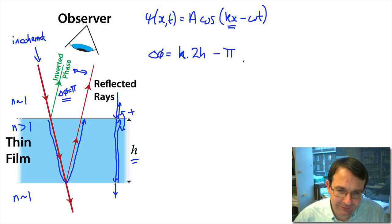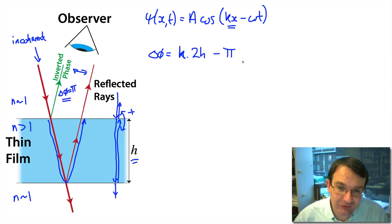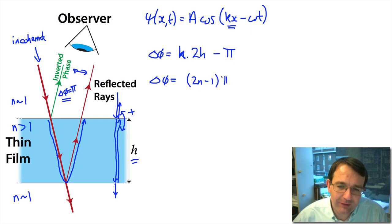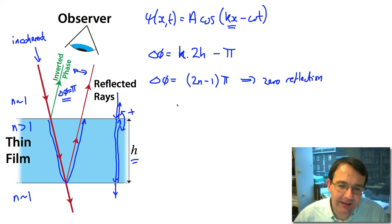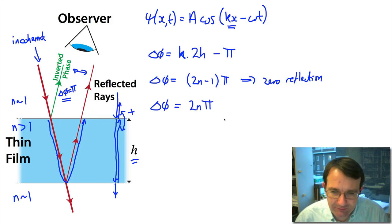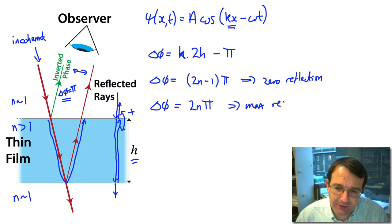Now we can ask: when do we get destructive interference — for what thicknesses of film will we see no reflected light? That will be the case when our phase difference is equal to an odd multiple of π, giving us zero reflection. If we want a strong reflection, we want the two rays to add constructively, which requires a phase change equal to an even multiple of π, giving us maximum reflection.